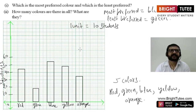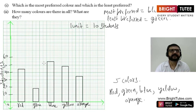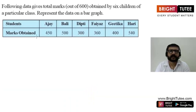So in this question we have seen how tabular data can be converted to a bar graph, how we can change the representation of data, how it is useful to us, and how we select the scale. Now let's see one more question on bar graphs.